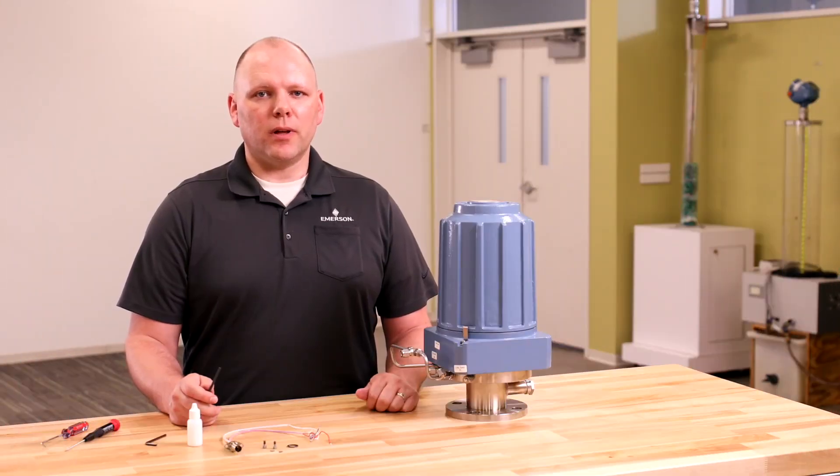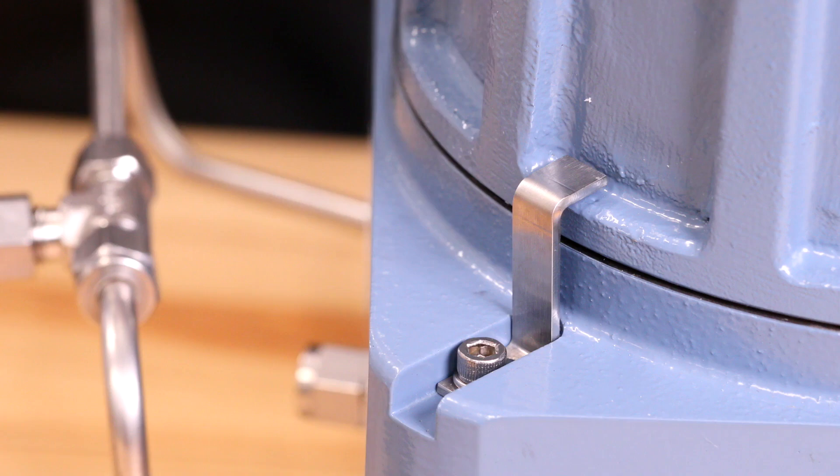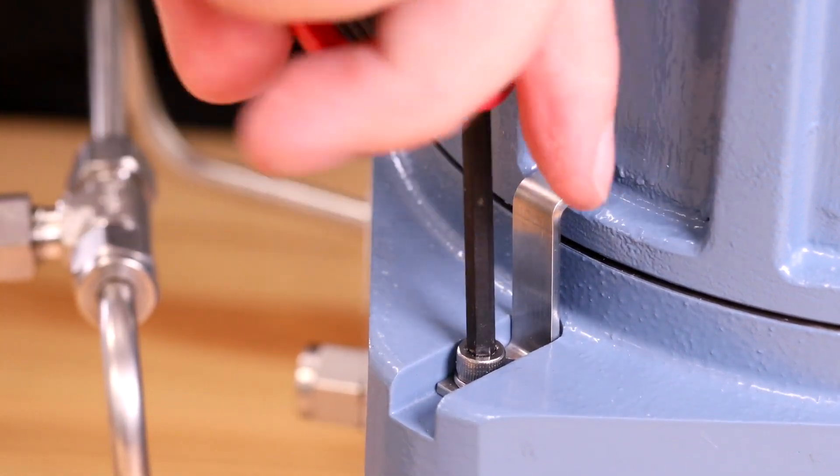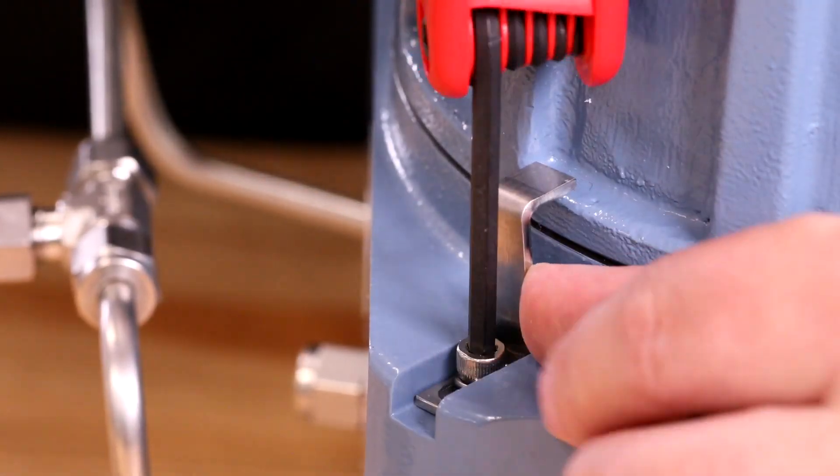To begin, loosen the screw on the locking clip with a four-millimeter Allen wrench and slide the locking clip away from the cover. Then retighten the screw.